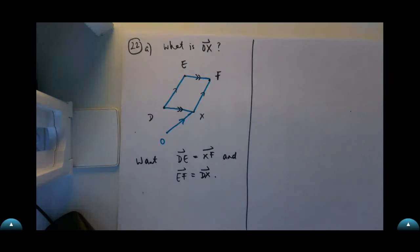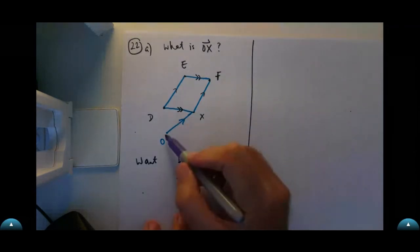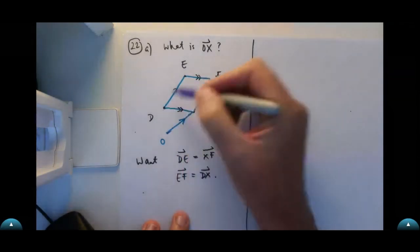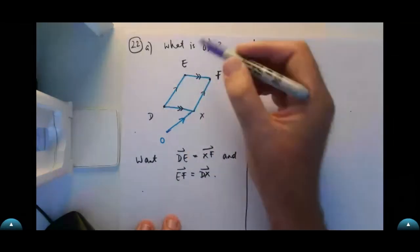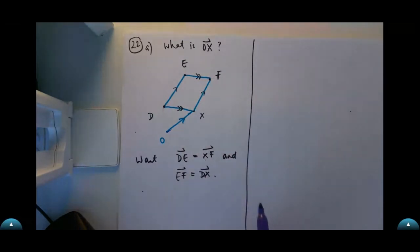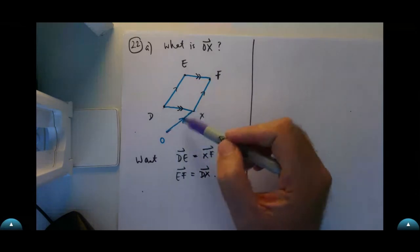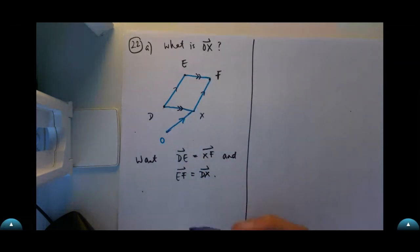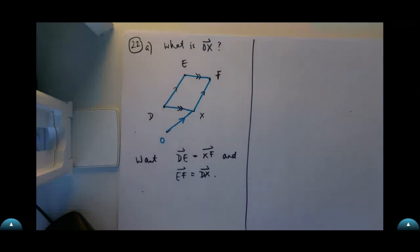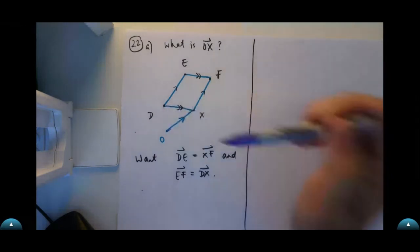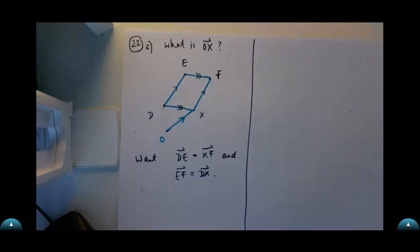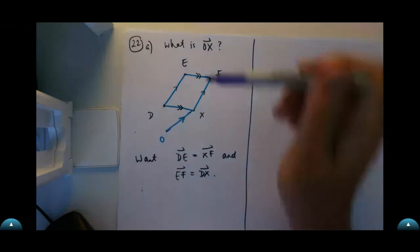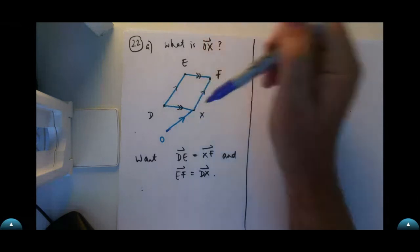This is much easier than it looks. We want to go from the origin to X, but we don't know what X is. We know D, E, and F, so we can compute those vectors. How can I get from the origin to X by adding or subtracting vectors? Who can tell me in the chat?